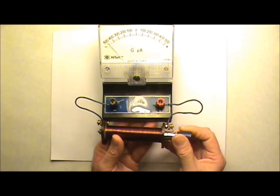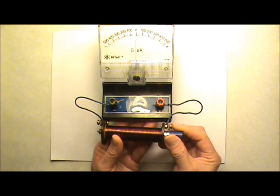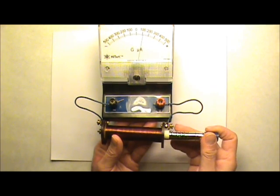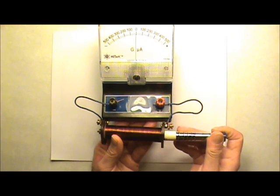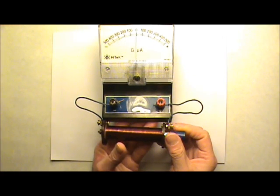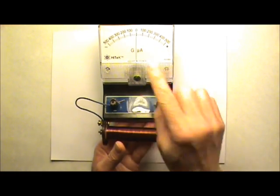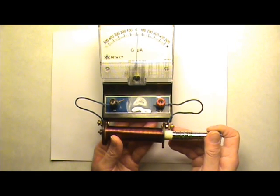When I push the magnet in, the induced current goes one way. When I pull it out, it goes another way. When I push it in, the needle goes to the left. When I pull it out, it goes to the right.